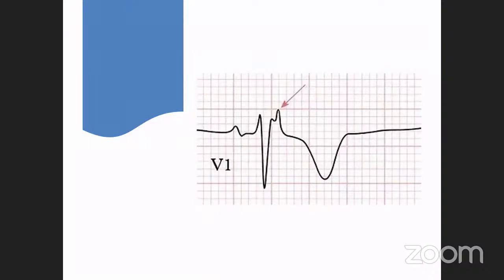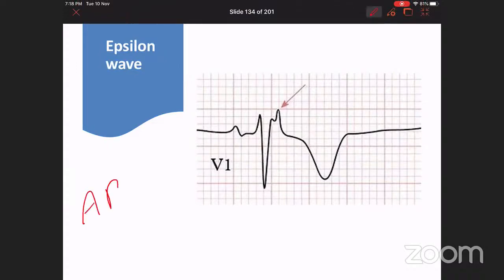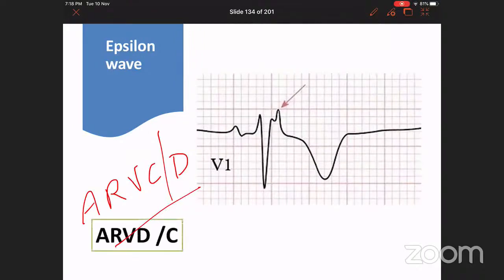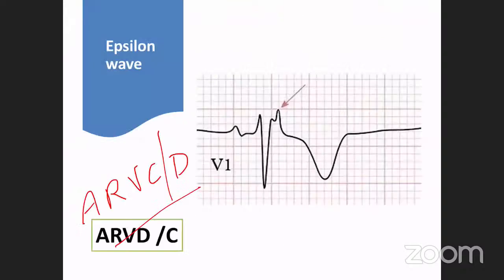Another wave occurring slightly after the J point is the Epsilon wave, associated with ARVC or Arrhythmogenic Right Ventricular Cardiomyopathy/Dysplasia (ARVCD). We already saw this disease when discussing cardiomyopathy. The Epsilon wave is characteristically seen in V1. These are the main abnormalities in the early repolarization phase: benign early repolarization, Osborne wave, J wave in hypercalcemia, Brugada syndrome, and the Epsilon wave in ARVCD.